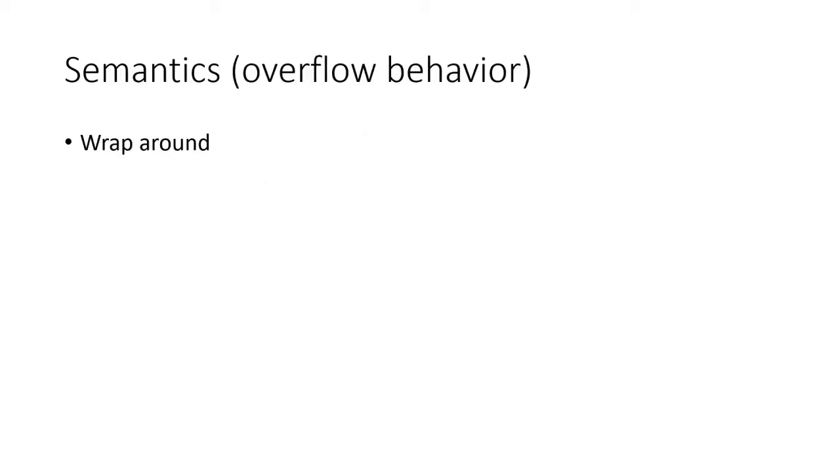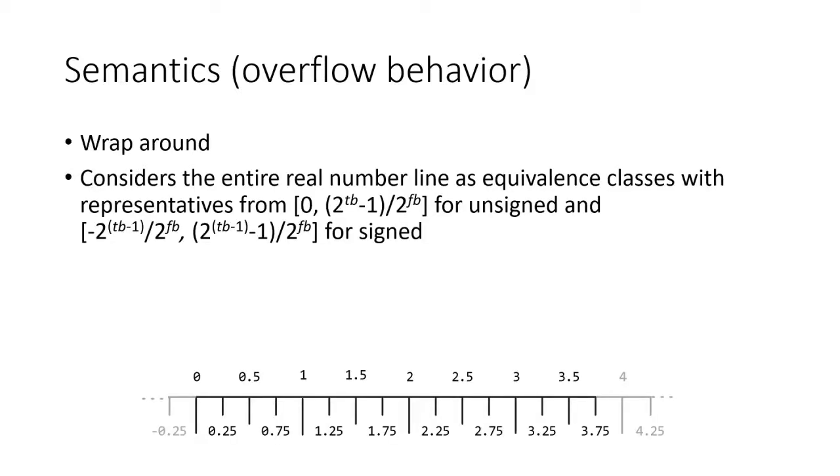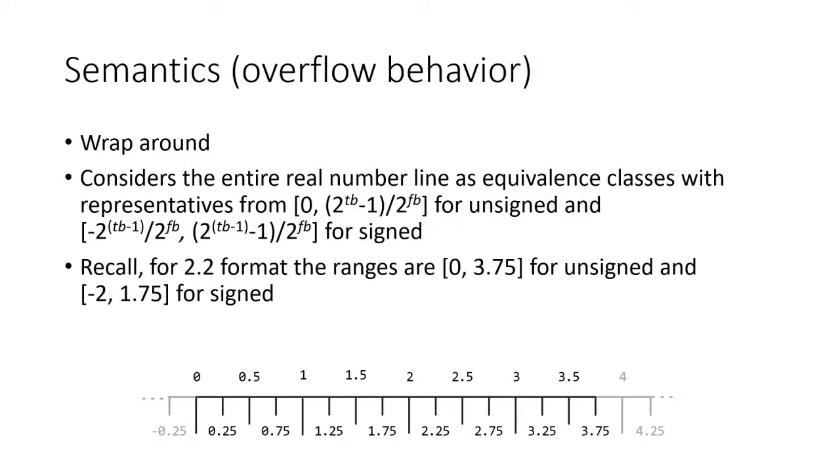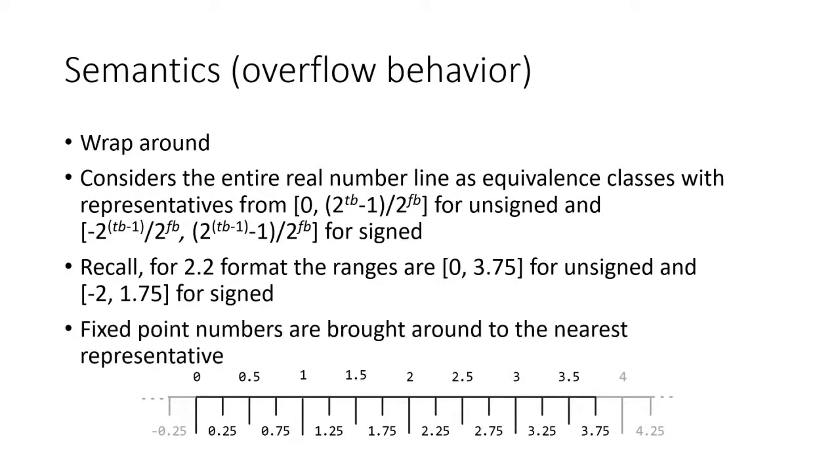We will now discuss the behavior of the wraparound overflow mode. We imagine the real number line as segmented into consecutive intervals, each representing an equivalence class. The canonical representatives are in the interval shown here. For the 2.2 format, the canonical unsigned range is from 0 to 3.75, and the canonical signed range is from negative 2 to 1.75. Fixed point numbers are wrapped around to the canonical representative. For example, negative 0.25 is wrapped around to 3.75. 4 is wrapped around to 0, and 4.25 is wrapped around to 0.25.